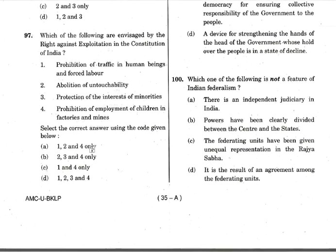Question 97: Which of the following are envisaged by the right against exploitation? This is a direct question about Articles 23 and 24. The prohibition of traffic in human beings and the prohibition of employment of children in factories and mines fall under right against exploitation. Untouchability abolition is Article 17 under right to equality, and protection of minority interests comes under religious freedom — so statements two and three are eliminated. Answer is option C — statements one and four.